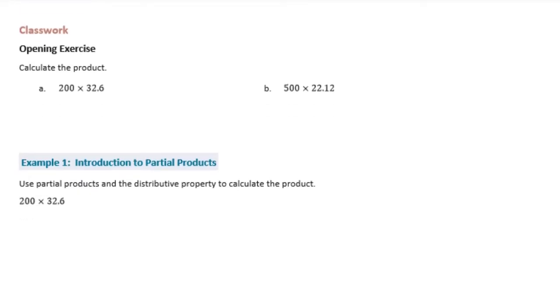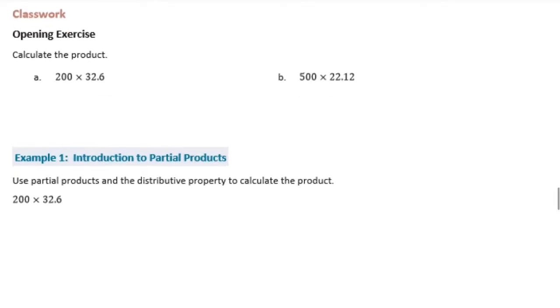So we're going to do this using the distributive property. The distributive property means that we're going to break apart one of the numbers into different factors and multiply that way to make the problem easier. I'm going to leave 200 alone and take 32.6 and separate it into 32 plus 0.6, kind of like what we were doing in fifth grade using expanded form.